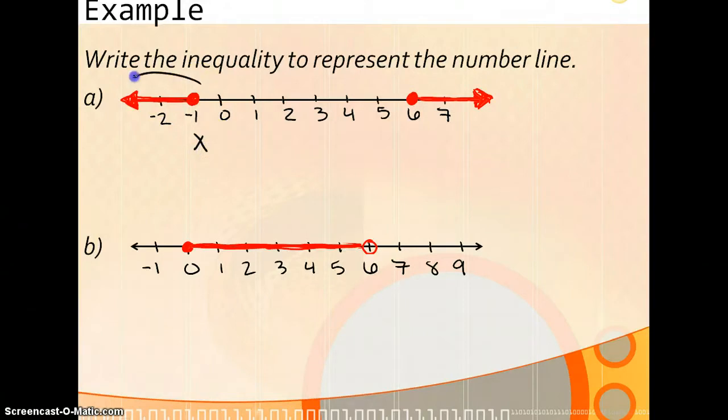So for the first portion of this inequality, it tells you that X is less than or equal to negative 1. And then the second one is X is greater than or equal to 6.